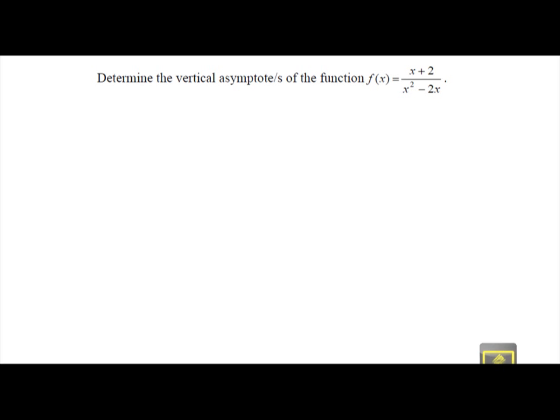This video will show you how to get the vertical asymptotes of a given function. The example asks us to determine the vertical asymptote of the function f(x) = (x + 2) / (x² − 2x).